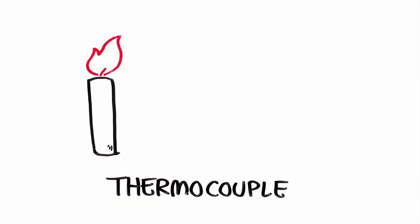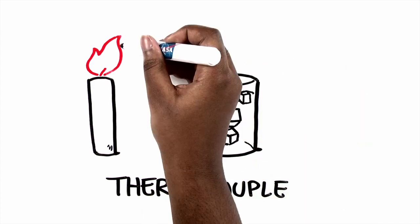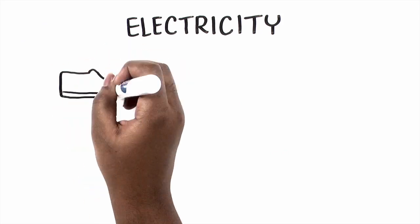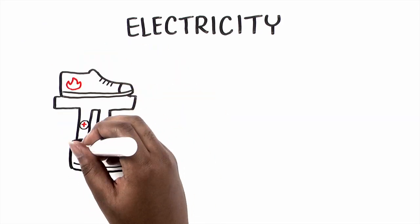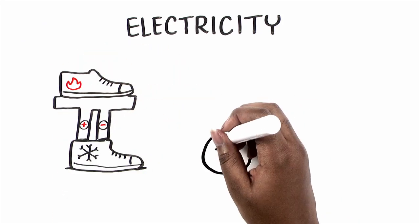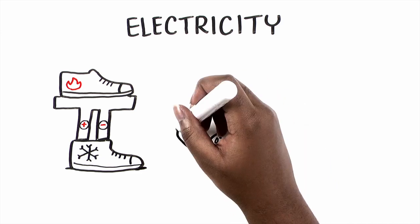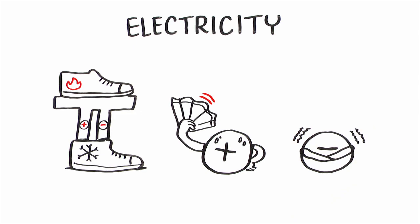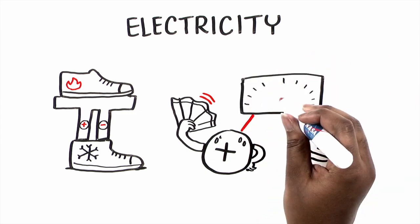Engineers use this material in devices called thermocouples, which are used to generate electricity. One of the thermocouple's shoes is hot and one is cold. This heat, transferred across a big temperature difference, makes electrical charges flow from the hot shoe to the cold shoe and produces an electrical voltage, and this generates useful electrical power.